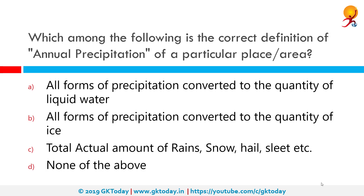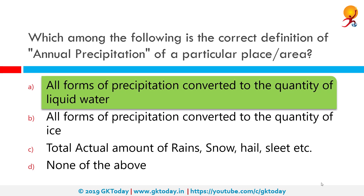Which among the following is the correct definition of annual precipitation of a particular place or area? The correct answer is all forms of precipitation converted to the quantity of liquid water. Snowfall, for example, would be converted into volume of liquid water and then considered as annual precipitation.